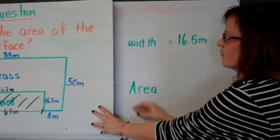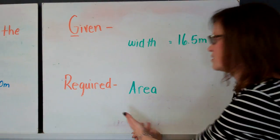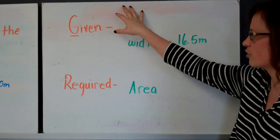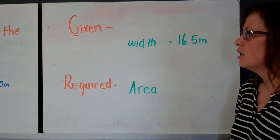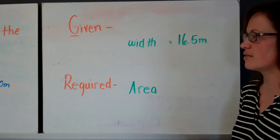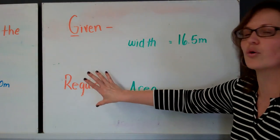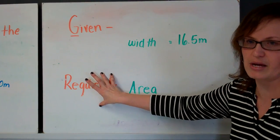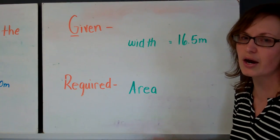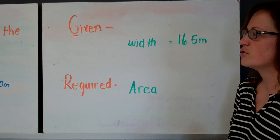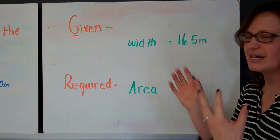Now sometimes for questions, you're going to have a lot of given information. And you're going to want to record all of that down. We didn't record the other dimensions of the grass or things like that because it's not necessary information for what is our required information, which is the area. We're looking for the area of the paved area, the paved surface. So we don't need the other dimensions.